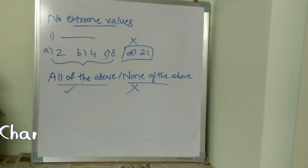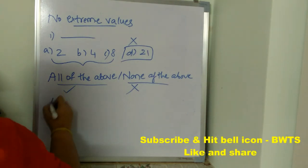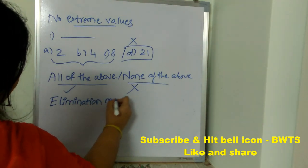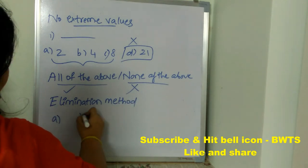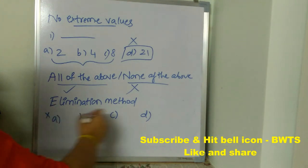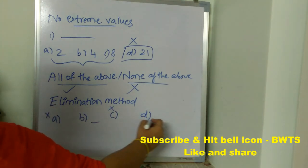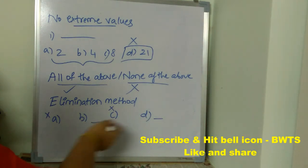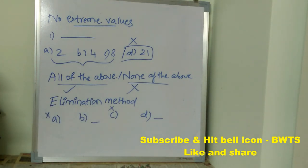Elimination method: when you have four options, using your logic and the concept you know related to the question, try to eliminate the irrelevant options. After eliminating irrelevant options, you will be left with only two options and you can then guess and put one of these options. This is called the elimination method — using your logic, common sense, and related concept knowledge to eliminate irrelevant options.